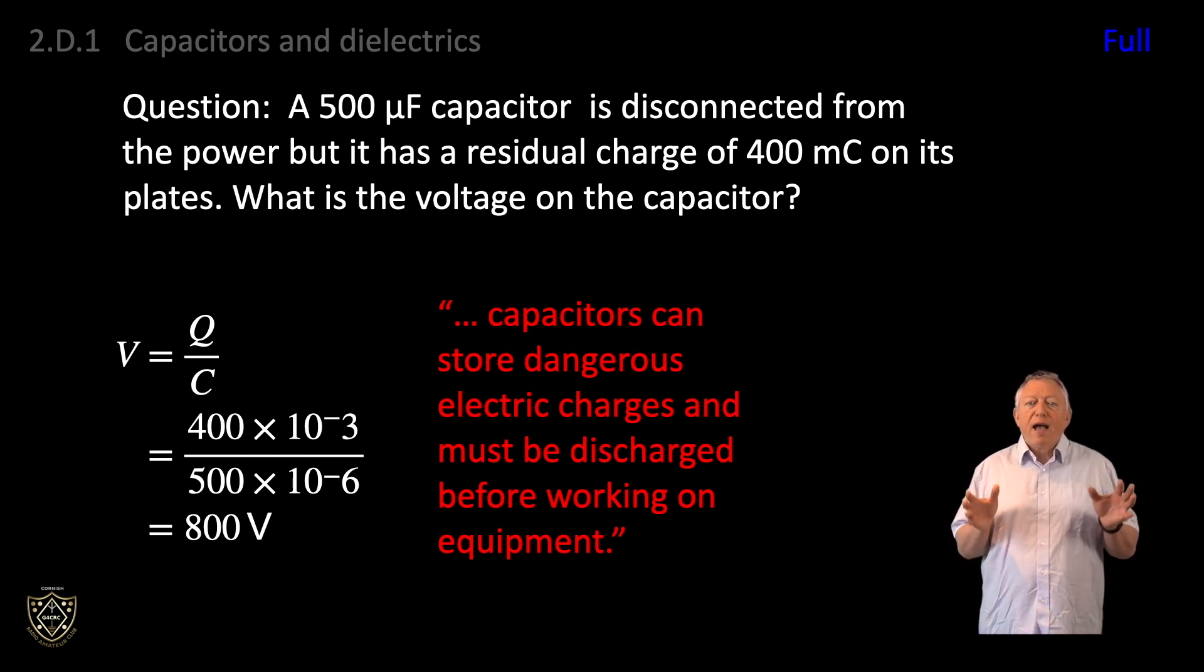So, summarizing. Capacitance depends on the area and separation of the plates and the permittivity of the dielectric. A coulomb, unit abbreviation capital C because it's named after Charles-Augustin de Coulomb, is the SI unit for a quantity of electricity or charge. Q is commonly used as a variable for quantity of charge and is given by the current times the time. Q equals I amps times T seconds.